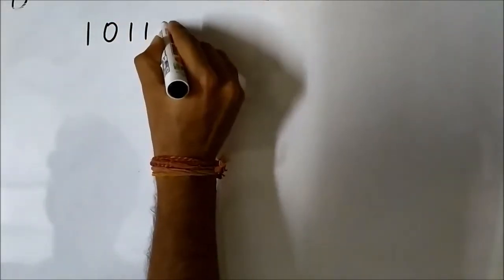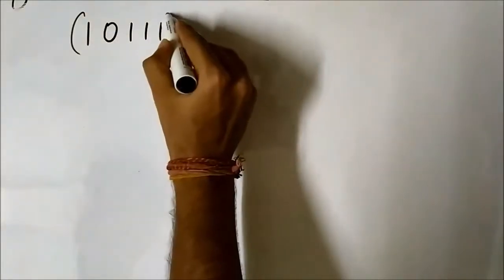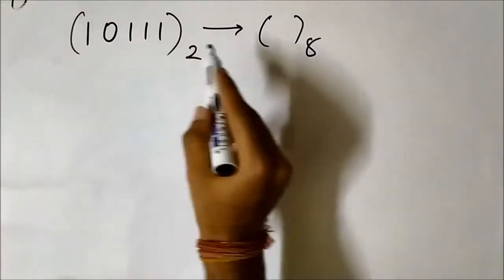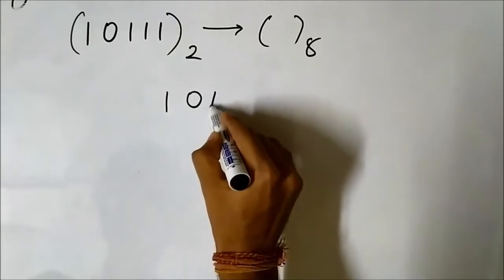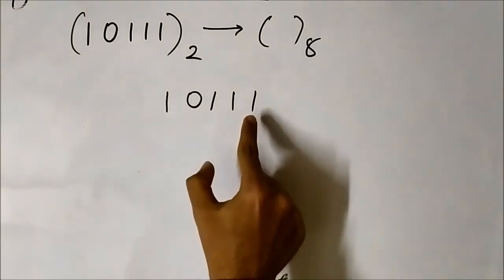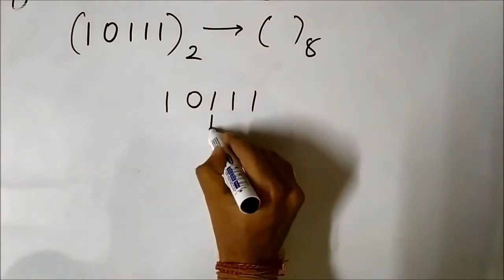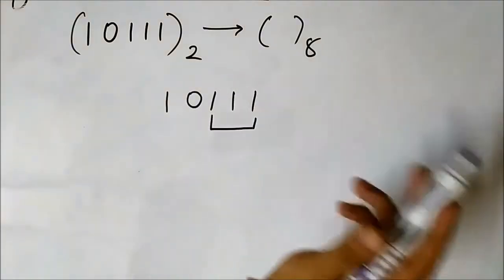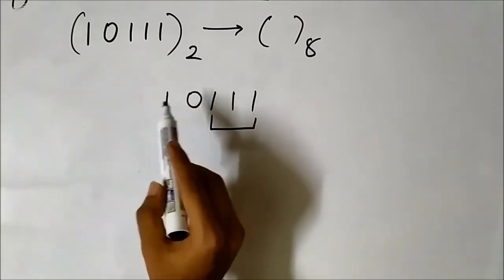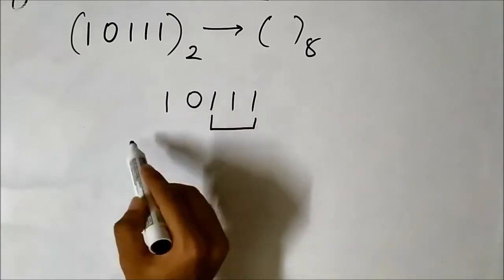Let us take another example: 10111 in binary. We have to find its equivalent octal representation. Starting from the LSB we form 3-bit groupings: the rightmost group is 111, but we only have 2 bits remaining — 1 and 0 — for the next group, so we are 1 bit short to form a 3-bit grouping.